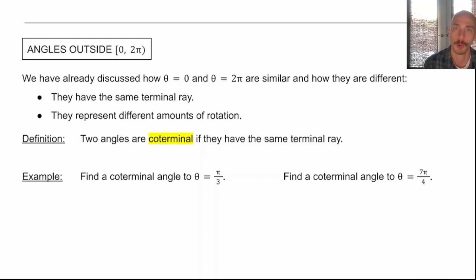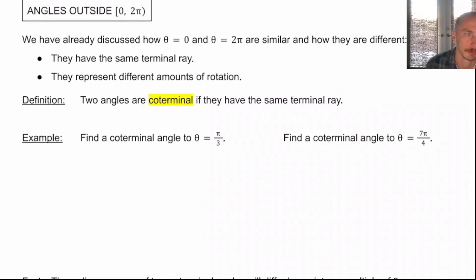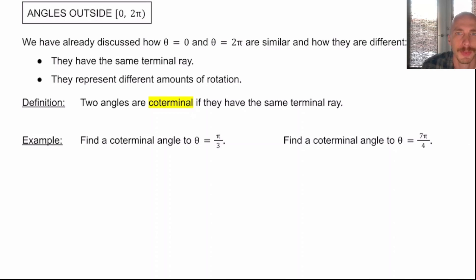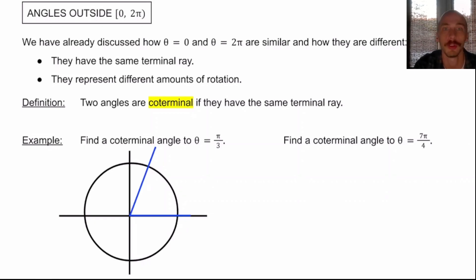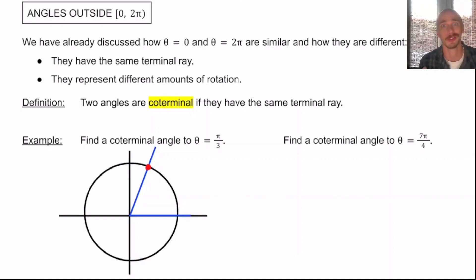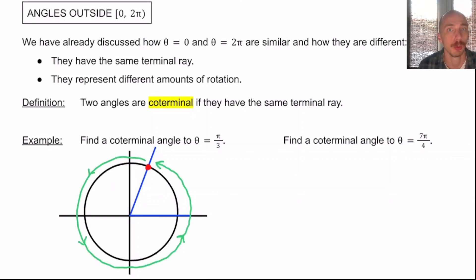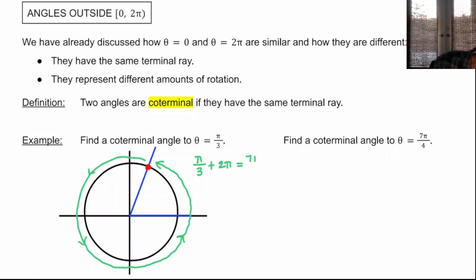For example, 0 and 2π are coterminal. If I wanted to find an angle coterminal to π/3, I'll draw a circle. π/3 is 60 degrees up the circle from the initial ray, and the terminal ray will be up here — hopefully a very familiar spot on the unit circle. The intersection point I'll call point P. If I go all the way around the circle again and end up right back where I started, I'd have added 2π worth of rotation — one full circle to π/3. So one coterminal angle would be π/3 + 2π, and 2π is 6π/3, so that would be a total of 7π/3.